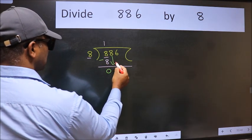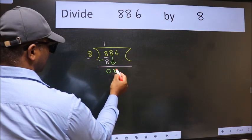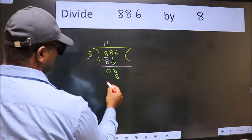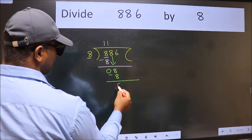After this bring down the beside number. So 8 down. When do we get 8 in 8 table? 8 once, 8. Now we subtract. We get 0.